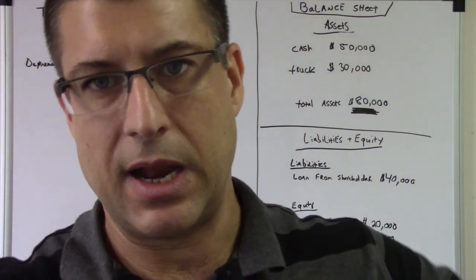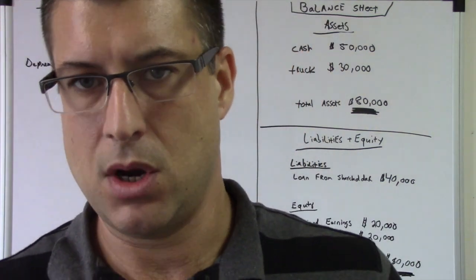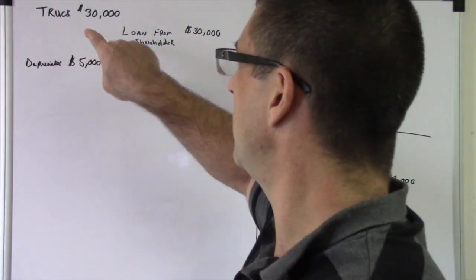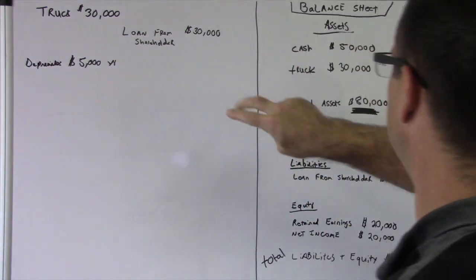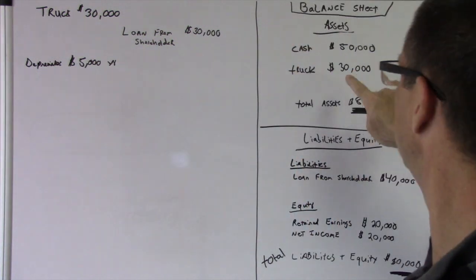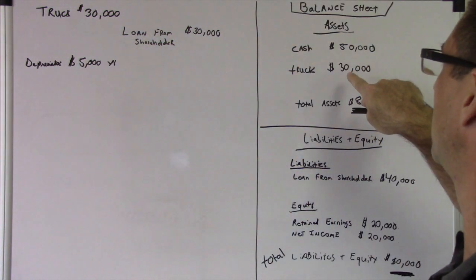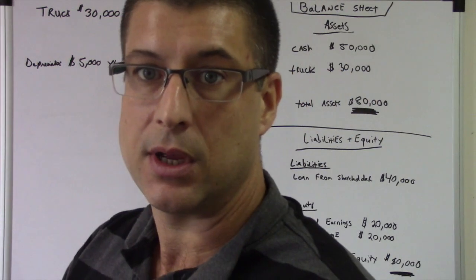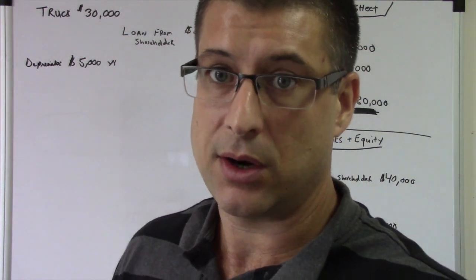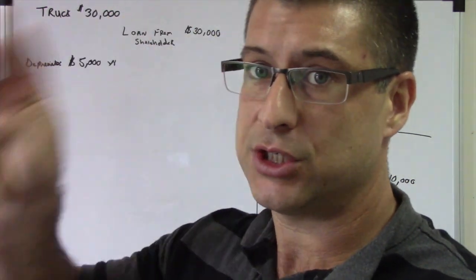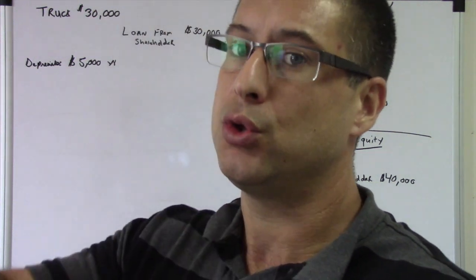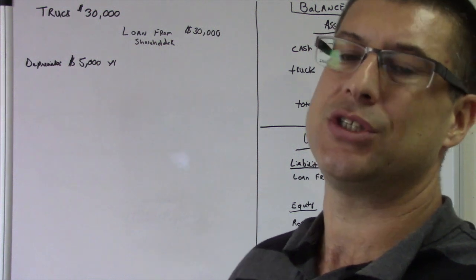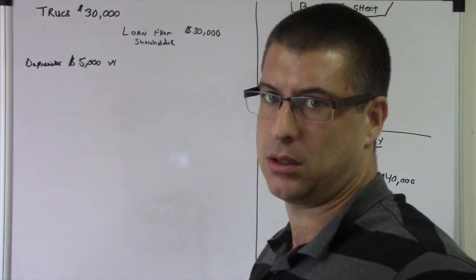So what's the journal entry for that? How do you do that? Now, let me fill you in on something. This truck is already on the books. Okay? These are our books. This is our balance sheet. Truck is already on there. You don't touch the truck account unless you sell it or until you scrap it or sell it. You don't touch it when you do depreciation. You lower the value with an account called accumulated depreciation, which is a contra asset.